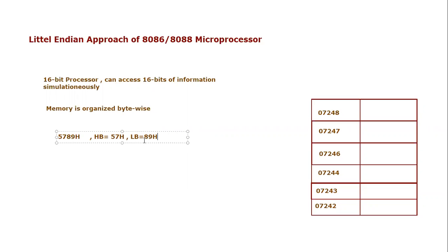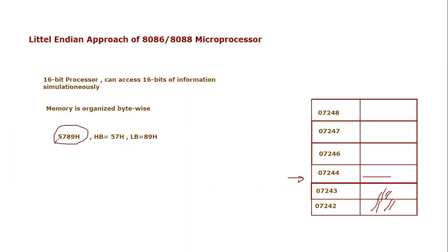In the Little Endian approach, the lower byte goes to the lower address and the higher byte goes to the higher address. Let's say memory is already filled up to address 07244h. The next location to fill is 07244h. We have a word of information — 5789h — to store. The higher byte is 57h and the lower byte is 89h. We store the lower byte 89h at lower address 07244h, because lower byte goes to lower address.